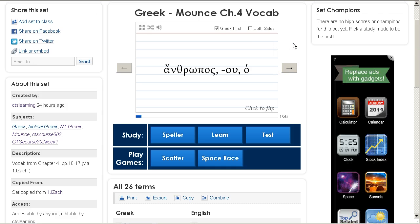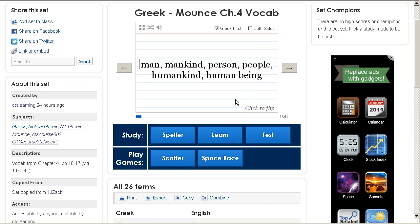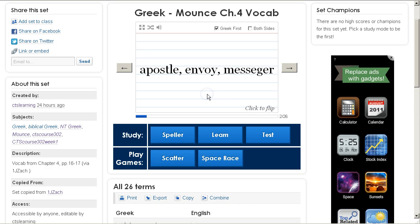So when you have it set up like this, to have Greek first, one side, then you look at the term, see if you know what it is, you click anywhere on the card to flip it over, and you see if you have the right answer. Then you go to the next one, click to flip, and so forth as you go along.